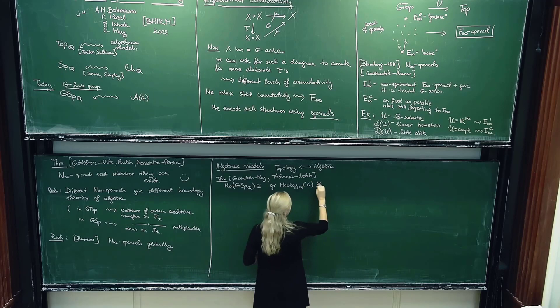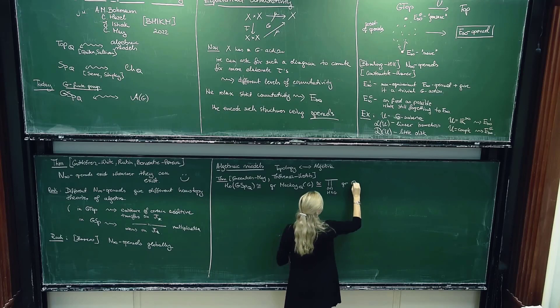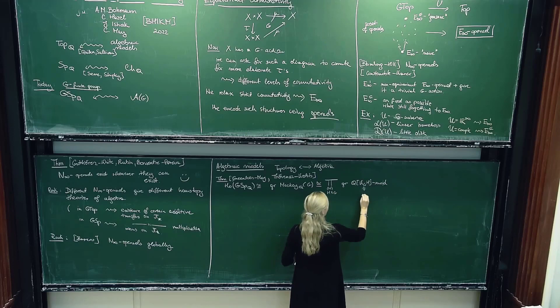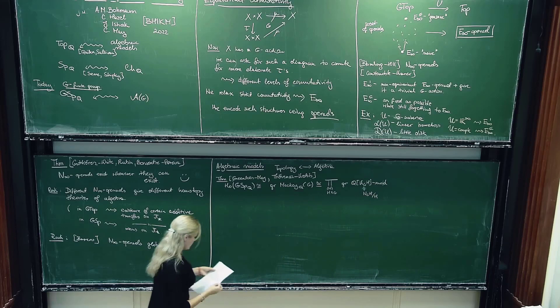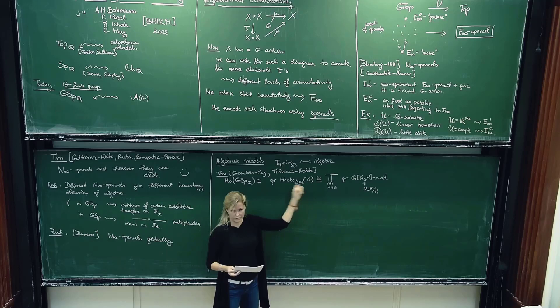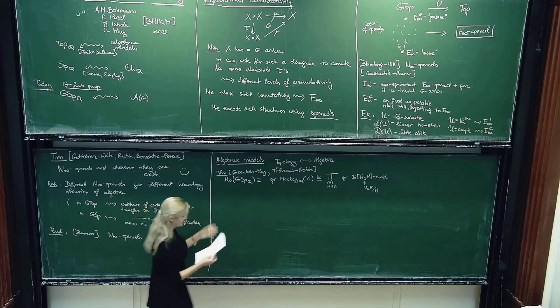That actually splits as a product over conjugacy classes of subgroups of G of graded Q[W_G H]-modules, where W_G H is the normalizer of H mod H. Greenlees and May really used the idempotents of the rational Burnside ring to do that splitting. Thevenaz and Webb had a more purely algebraic approach for that splitting, but they also did it around the same time.